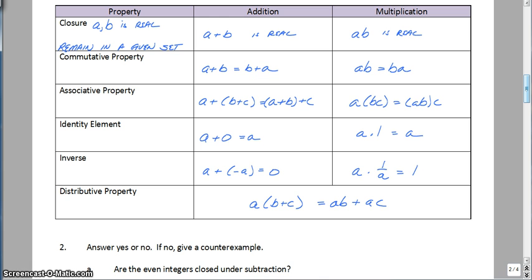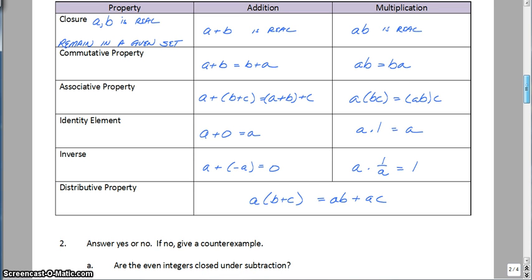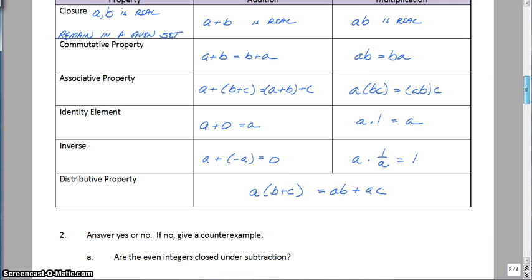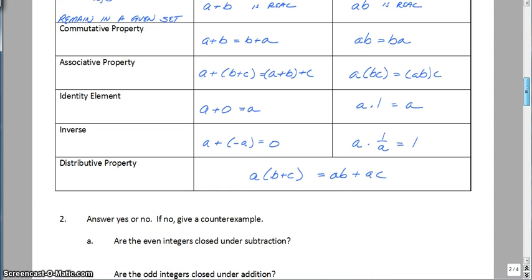The associative property for addition and multiplication basically says it doesn't matter which way you group numbers using addition or multiplication. The identity element. In addition, what can we add to a number that will give us that exact same number? The answer is 0. So a number plus 0 is always going to be that same number. In multiplication, what can we multiply a number by to get the same number? The answer is 1. Inverse. In addition, a number plus what gives you 0 and it is the opposite of that number. So 2 plus a negative 2 will give you 0. In multiplication, it is the reciprocal. 2 times 1 half is equal to 1. The distributive property, you know what the distributive property is. You just have to multiply a to both b and c and you will get ab plus ac.